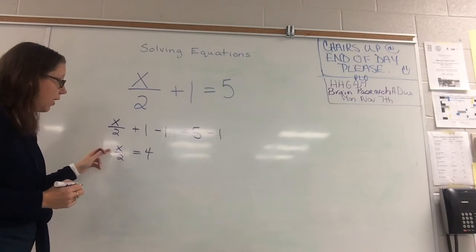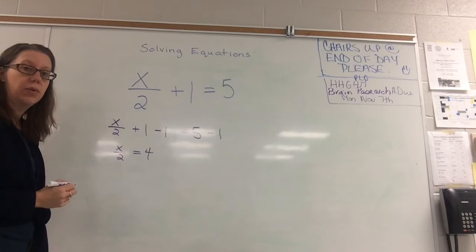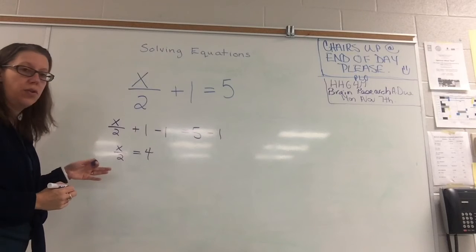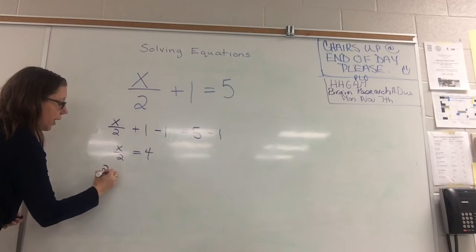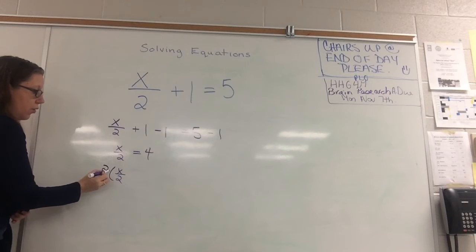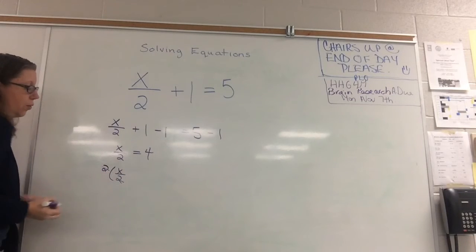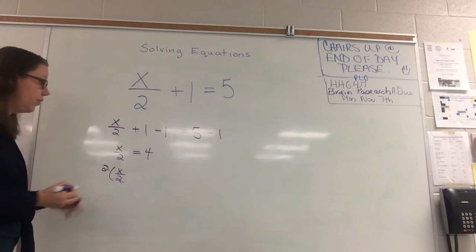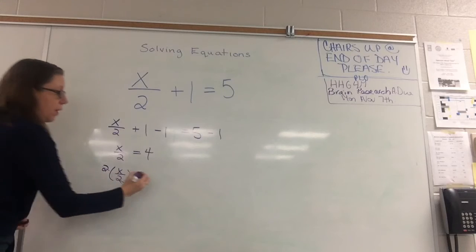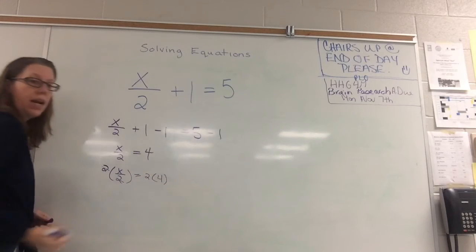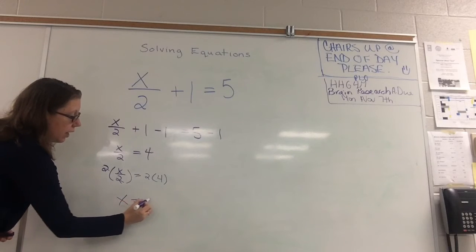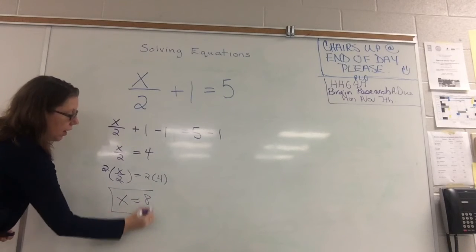Now, I've got x over 2 equals 4, or x divided by 2 equals 4. The opposite operation of dividing by 2 is to multiply by 2. So I'm going to multiply this side by 2, because when I do that, 2 and 2 from the numerator and the denominator, they cancel each other out. But if I multiply this side by 2, I have to multiply the right-hand side by 2. And what I get is x equals 8, and that's my solution.